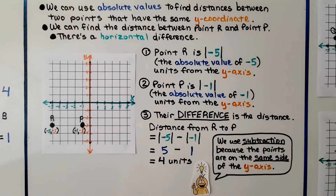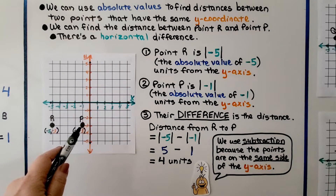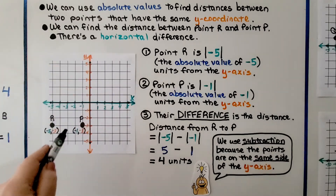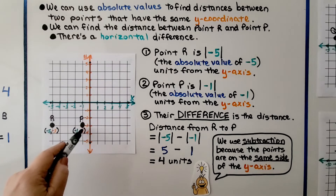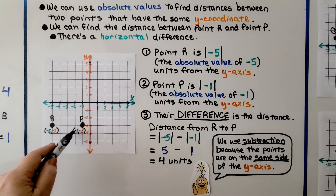We can use absolute values to find distances between two points that have the same y-coordinate. We find the distance between point R and point P — there's a horizontal difference, whereas before we had a vertical difference. They both have the same y-value of negative three, but point R has a horizontal value of negative five and point P has a horizontal value of negative one.